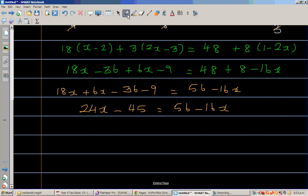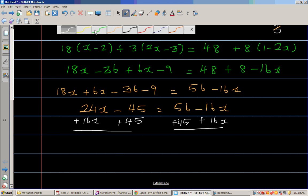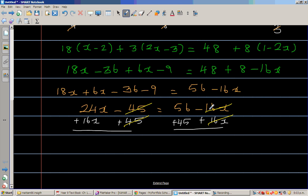So I want to bring the x's on one side and the numbers on the right hand side. I'm going to bring the x's on the left hand side. So I don't want minus 16x sitting here. So I'm going to add 16x to this side. I want the numbers on the right hand side, so I'm adding this by 45. So now this and this gets cancelled. Minus 45 plus 45, minus 16x plus 16x gets cancelled.